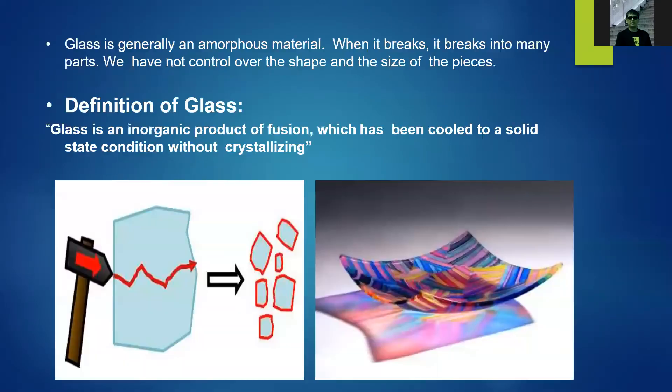In the early days, glass is an amorphous material. When it breaks, it breaks into many parts and we do not have control over the shape and size of the pieces. The definition of glass is: it is an inorganic product of fusion which has been cooled to a solid state without crystallizing.